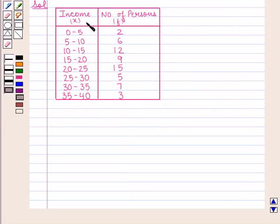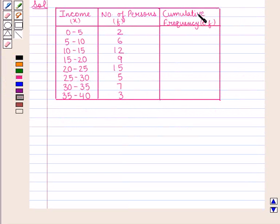The given distribution is as follows. Next we shall find cumulative frequency. The first entry in the cumulative frequency column will be same as that of frequency, that is 2. Next will be 2 plus 6 that is 8, 8 plus 12 is 20, 20 plus 9 is 29, 29 plus 15 is 44, 44 plus 5 is 49, 49 plus 7 is 56, 56 plus 3 is 59.